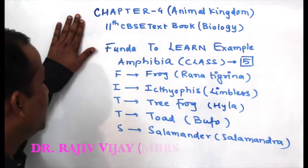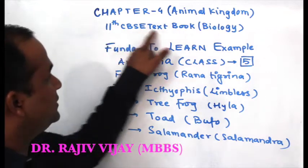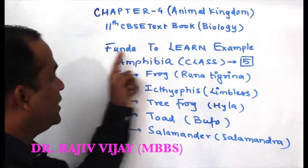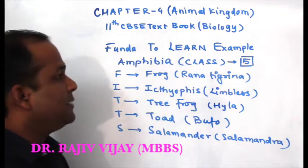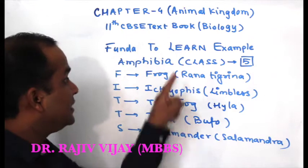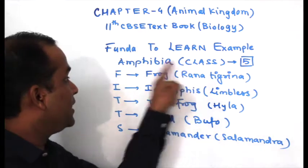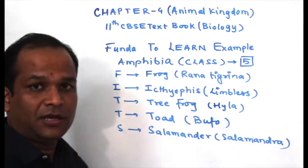Chapter 4, Animal Kingdom 11, Textbook Biology. The funda to learn examples of class — remember, not final class — Amphibia.